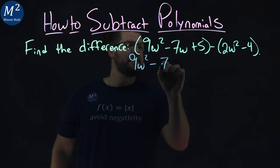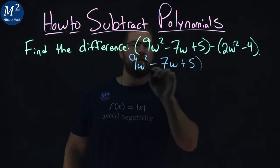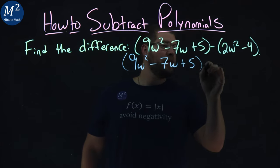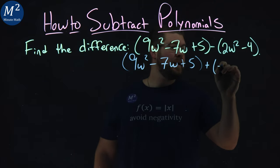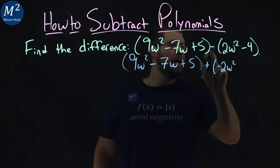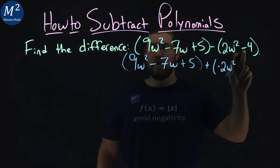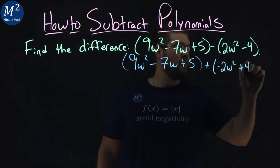9w squared minus 7w plus 5 in parentheses, and then instead of minus, we're going to add and distribute the minus sign to both parts. Minus 2w squared, and then double negative for the 4 makes it positive, plus 4.